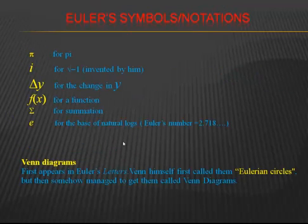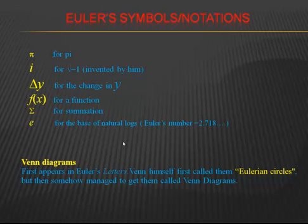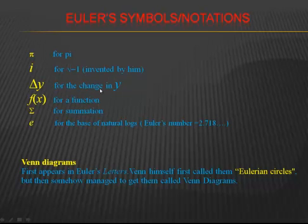Thinking about symbols and notation of that time, modern mathematicians still use what Euler was using, such as pi, i for the square root of negative 1, delta y for the change in y, f(x) to define a function, the summation symbol, and the number e which equals 2.718.